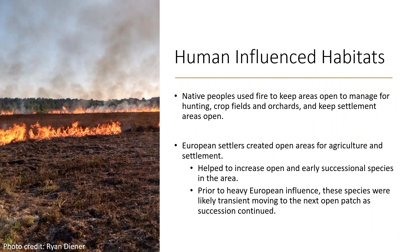Once humans came on the landscape, before European colonization, native peoples used fire to keep areas open to manage for hunting, crop fields and orchards, and settlement areas. They had been practicing habitat management for time immemorial. Once European settlers came on the scene, they created more and more open areas for agriculture and settlement, cutting back forest areas. This helped increase open and early successional species like bobolink that use these farm fields.